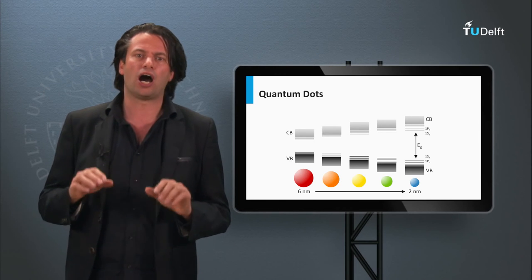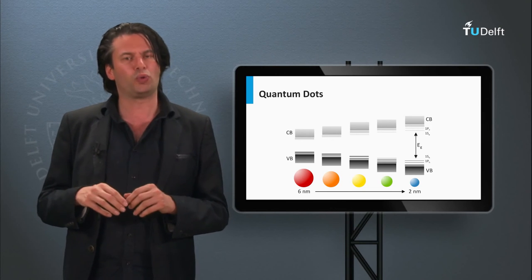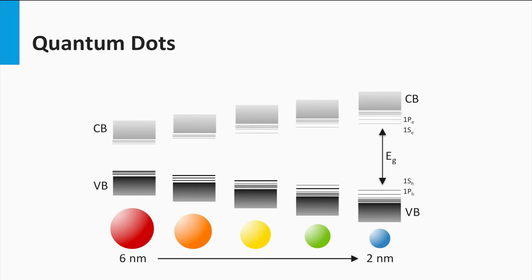Both for down conversion and multiple exciton generation, nanostructured semiconductors are studied and developed. These structures are based on so-called quantum dots — small spherical nanoparticles made of semiconductor materials with typical diameters of a few nanometers. These semiconductor particles still behave like a semiconductor material; however, due to quantum mechanical effects, the bandgap can be larger in semiconductor quantum dots compared to the bandgap of the semiconductor material in large bulk materials.